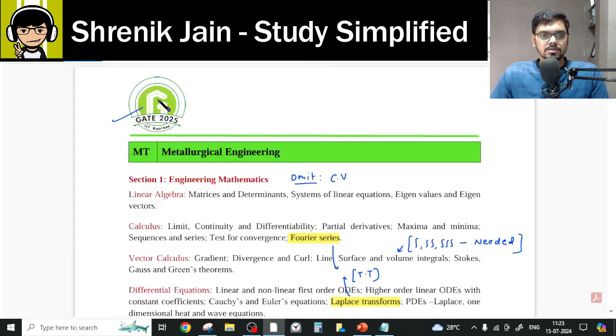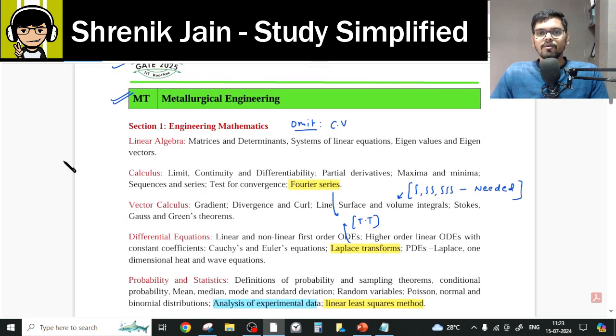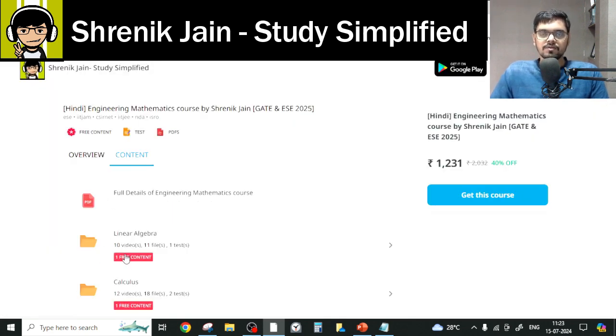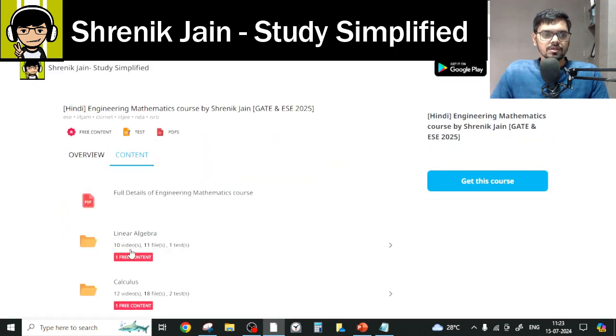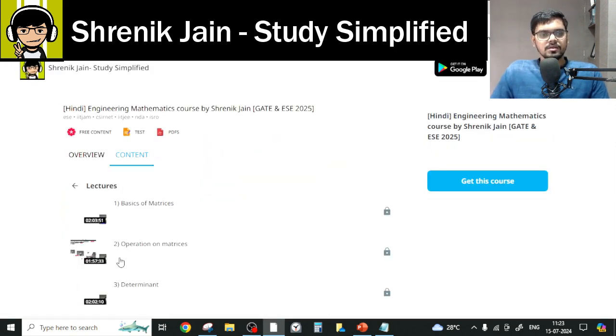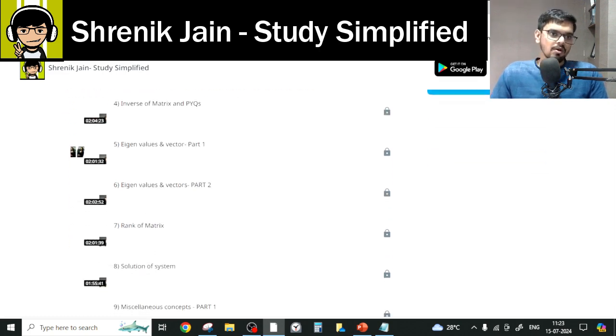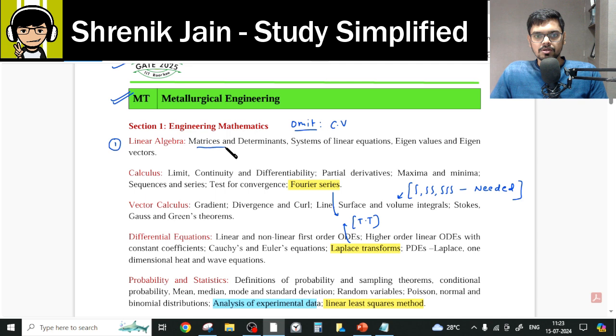As per your official syllabus IIT Roorkee 2025 Metallurgical Engineering, you do not have all the chapters. First chapter is Linear Algebra, so every lecture from the Linear Algebra folder you have to study. And if you have doubts such as, but sir, in this lecture series you have taught some topics like inverse of the matrix, determinant, and then rank of the matrix, which I cannot see in my syllabus, then can I omit it?